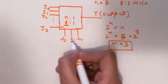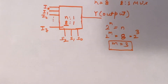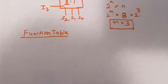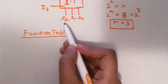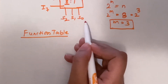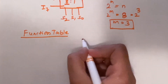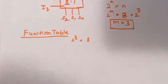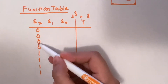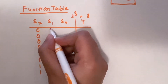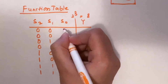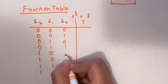Now we will look at the function table of this mux. We have 3 selection lines: S2, S1, and S0. We will have 2 to the power 3 equals 8 combinations of 0 and 1. So the combinations start: S2 goes 0,0,0,0,1,1,1,1; S1 goes 0,0,1,1,0,0,1,1; and S0 goes 0,1,0,1,0,1,0,1.